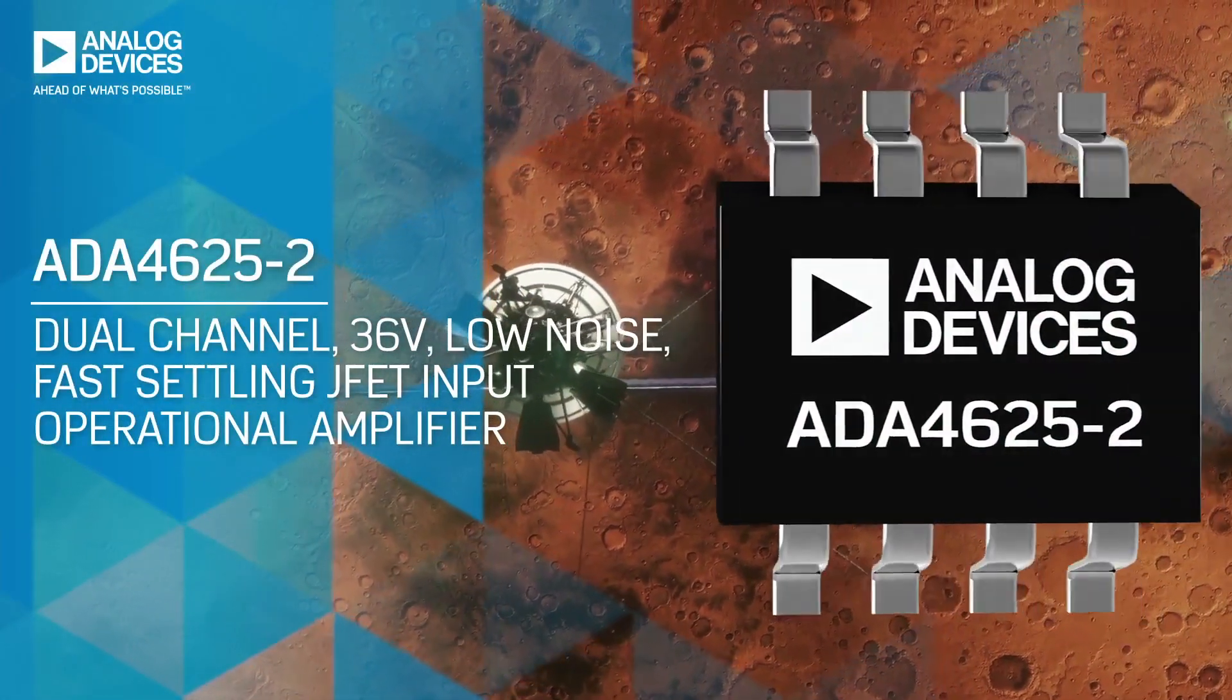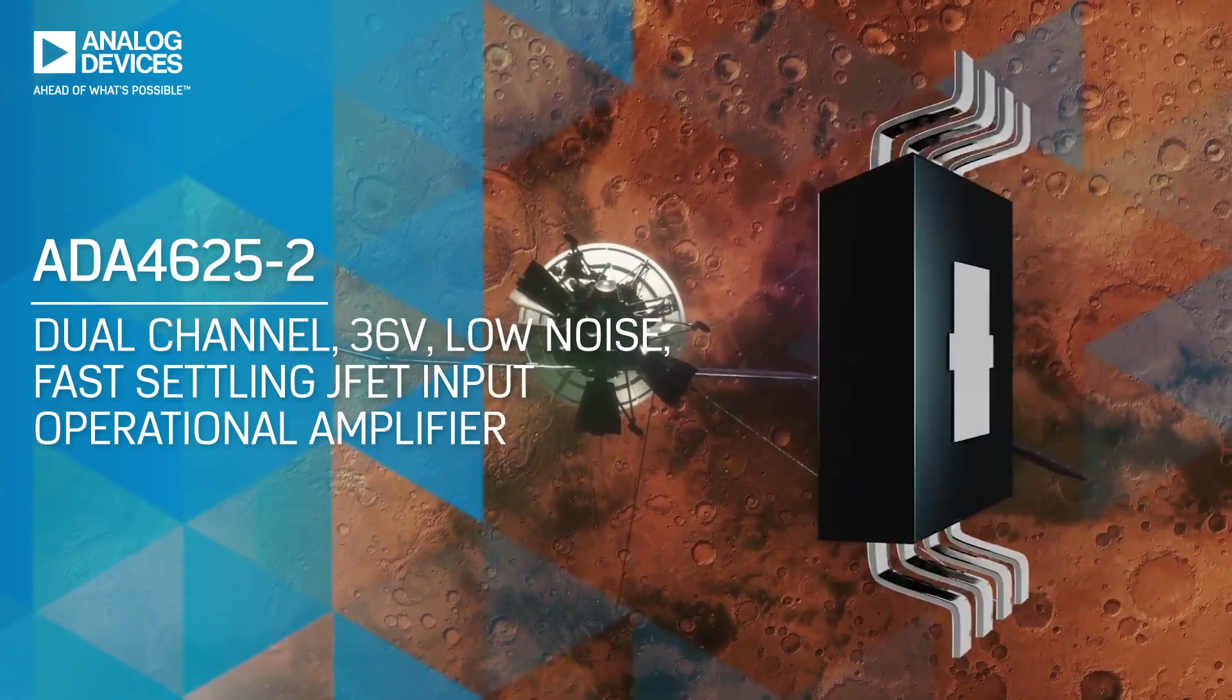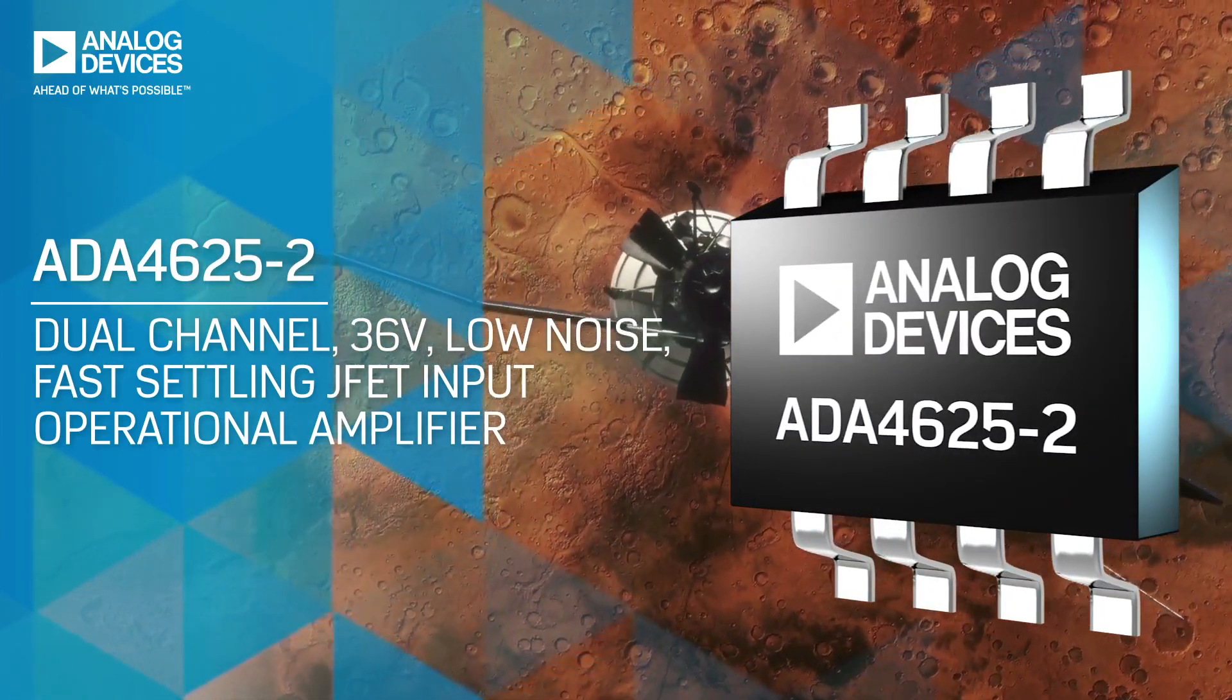The ADA4625-2 is a dual-channel, 36-volt, low-noise, fast-settling JFET input op-amp.